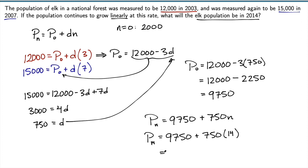We plug this into our calculator. We get 20,250. And that's our estimate for the elk population in 2014, following the linear model.